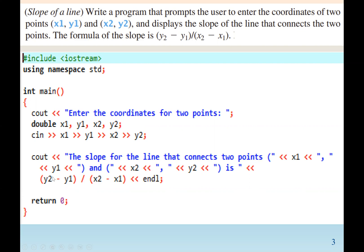Next, we have to do our operation. We know the formula to find the slope is the difference of y2 minus y1 divided by x2 minus x1. Then we print our results. So here we are using cout, and we say the slope for the line that connects the two points, and the two points are x1, y1, and x2, y2 is.